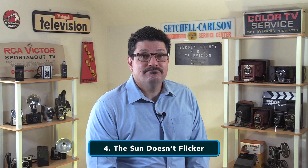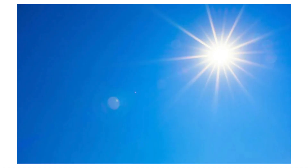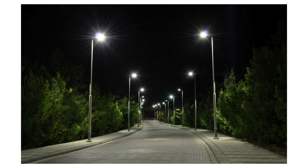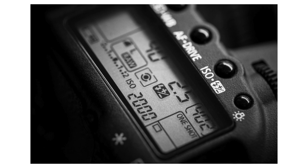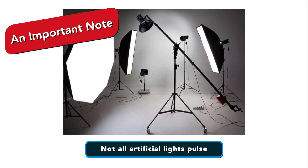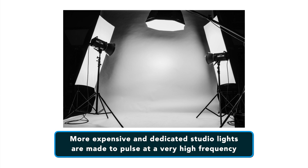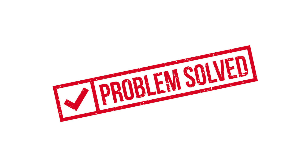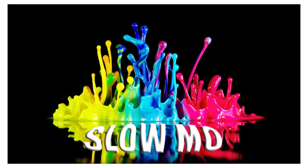Number four: if all else fails, the sun does not flicker. The sun is a constant light source, so you can shoot at any setting when outside, no matter what country you're in. Just remember that if any artificial lights show up while outside and you are on the wrong setting, the camera video flicker will still show up. An important note: not all artificial lights pulse either. More expensive and dedicated studio lights are made to pulse at a very high frequency above 60Hz, so they look as though they are constantly on, solving the flickering issue altogether — though if shooting at higher frame rates for slow motion, that could still be an issue.